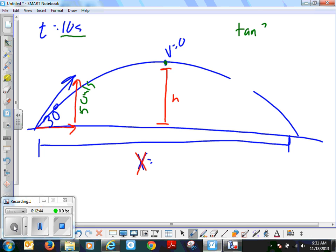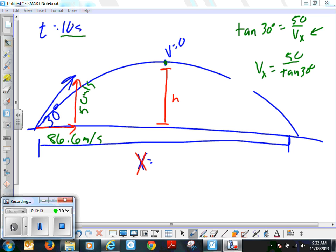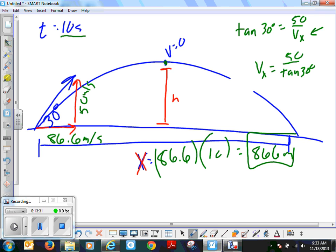So now we have to figure out our velocity in the x direction. Tangent of 30 equals 50 over the velocity in the x. So you might be careful on this, because kids a lot of times will just do the multiplication thing, because that's what they're so used to doing. But you can see in this case, it's not going to happen, because we have our unknown in the denominator. So the velocity in the x then becomes 50 divided by the tangent of 30. And that number is 86.6 meters per second. So the velocity in the x direction is 86.6 times 10 seconds, or 866 meters.